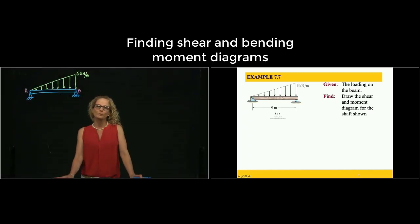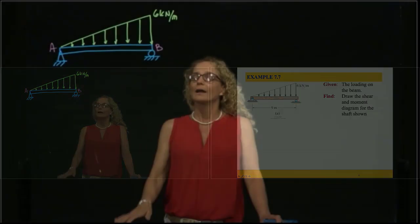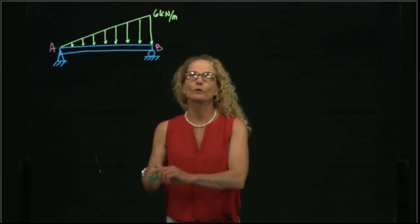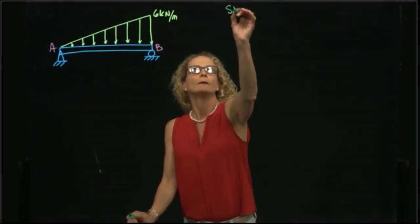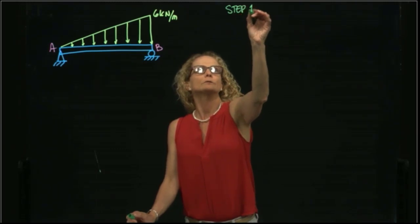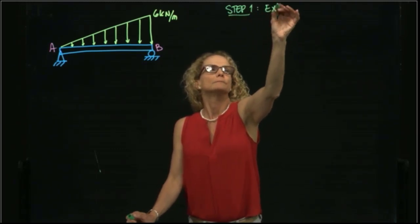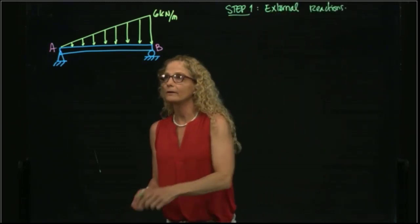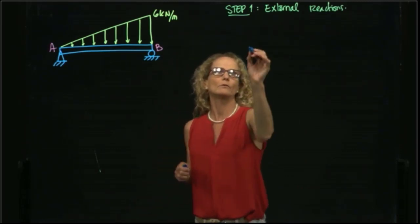Hi, this is example number 7.7, and here we have a beam AP with only one distributed force, which is 6 kilonewtons per meter. As you recall, the first step is always to find the external reactions, and to do that, we will draw our free body diagram of our beam.